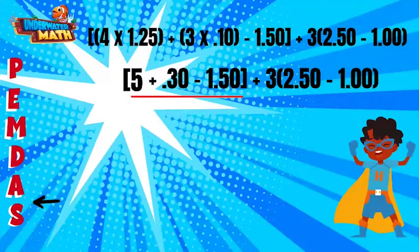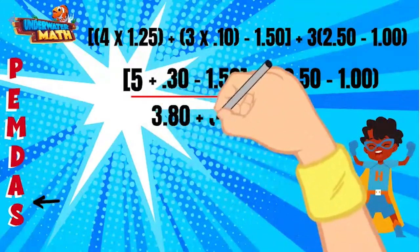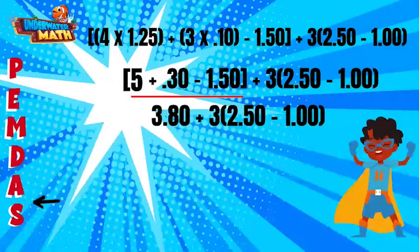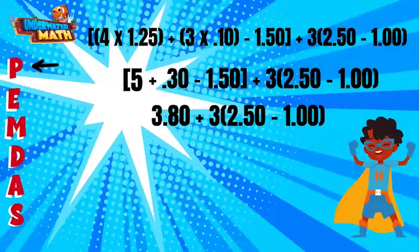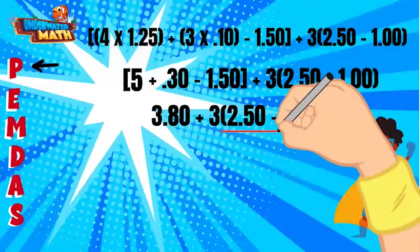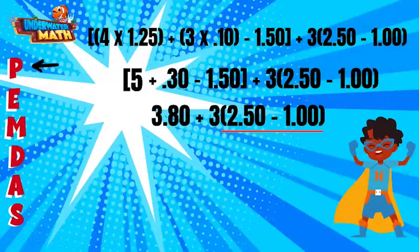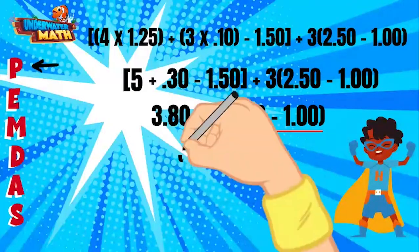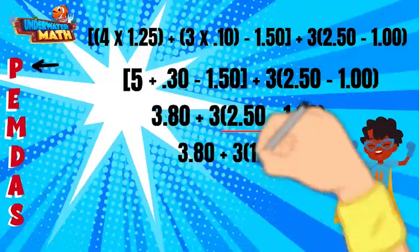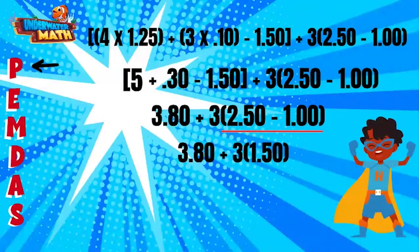We are ready to write our next line, replacing our brackets with 3.80. Now that we have finished that set of brackets, we continue to the next set of parentheses. Here we have 2.50 minus 1.00, which is 1.50. I can replace this in the next line.